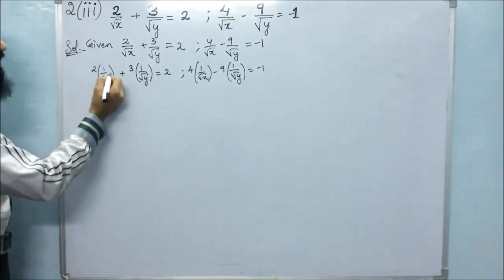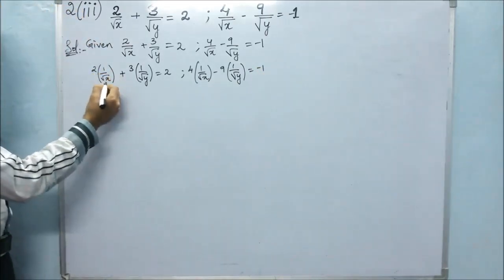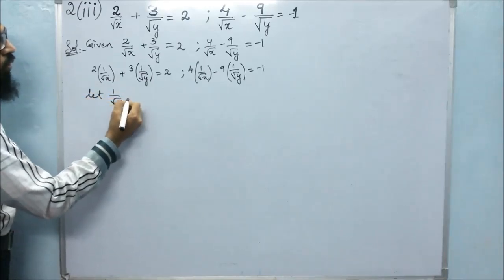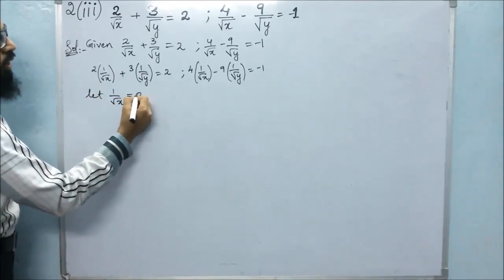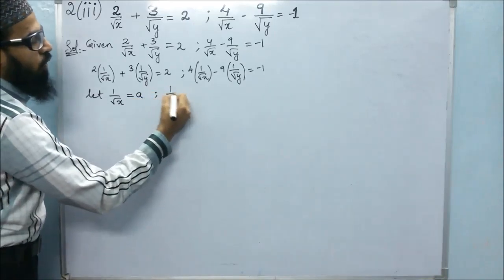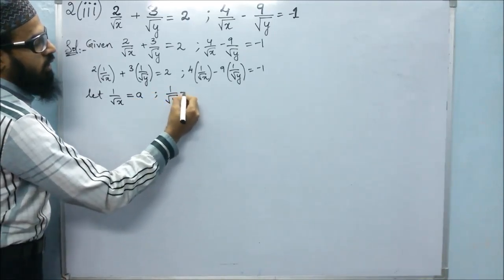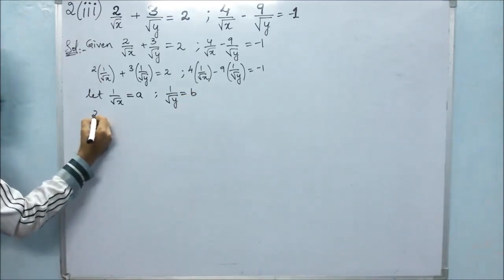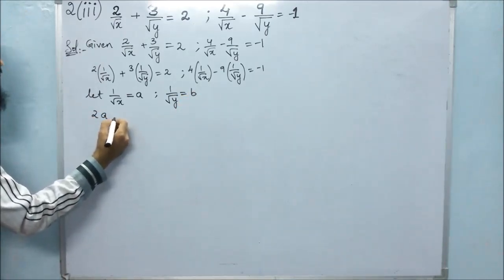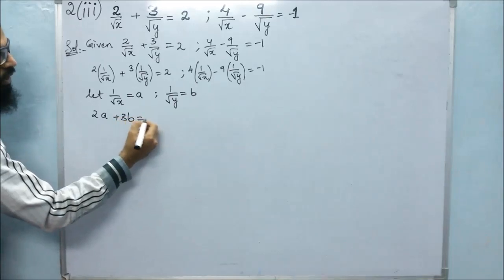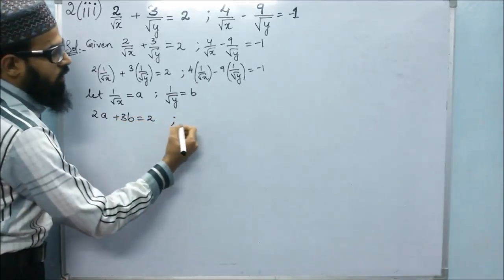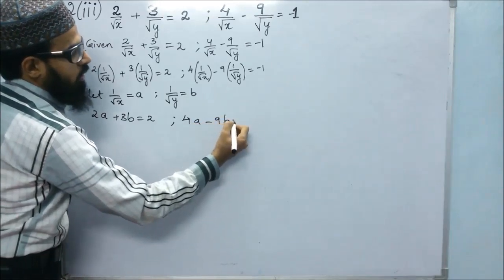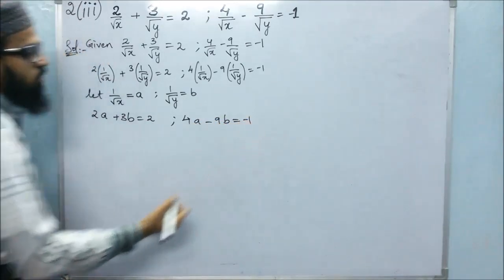Now, we can take 1 by root x as A. So let 1 by root x equals A and 1 by root y equals B. We will get 2A plus 3B is equals to 2, and 4A minus 9B is equals to minus 1.